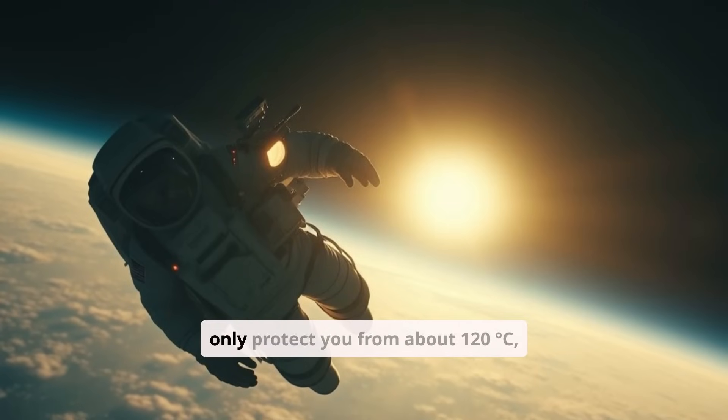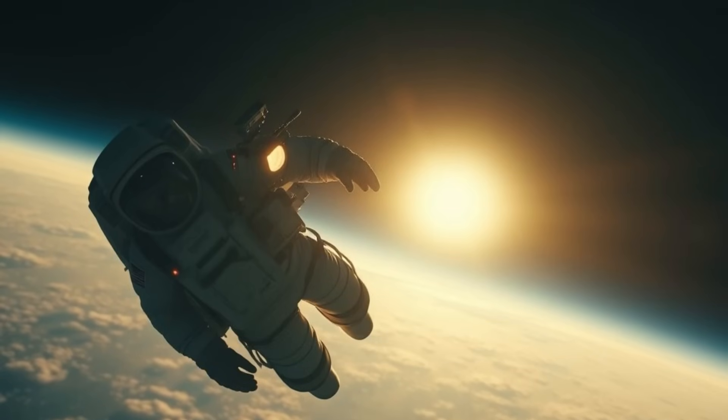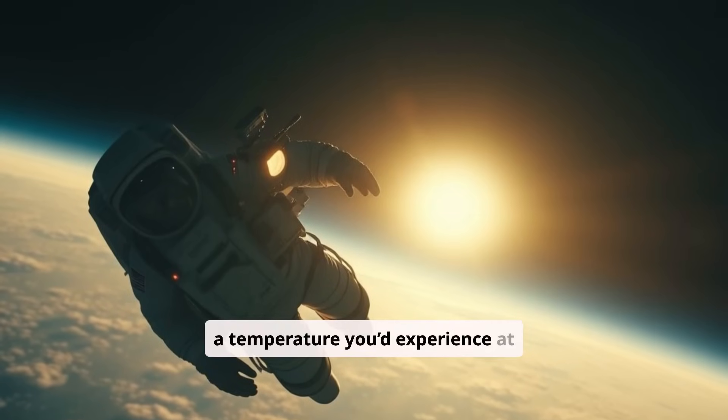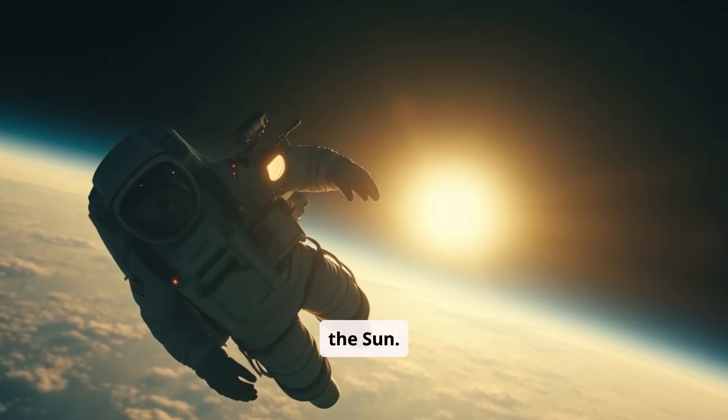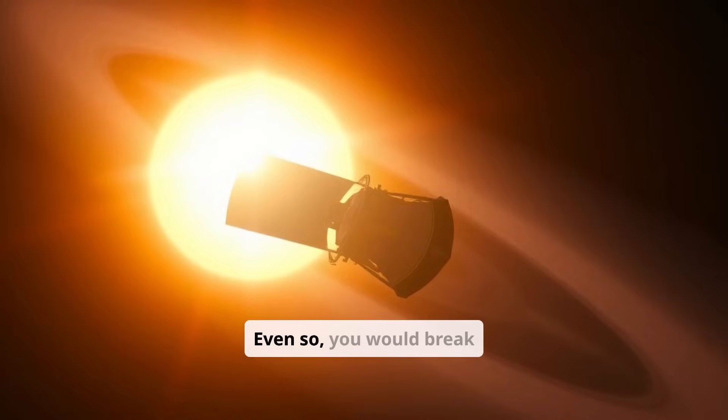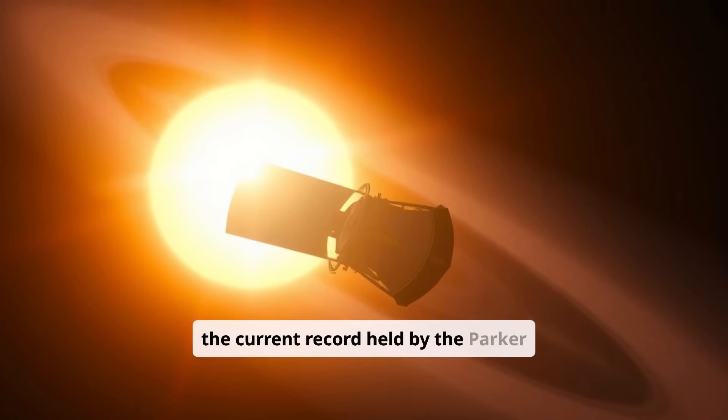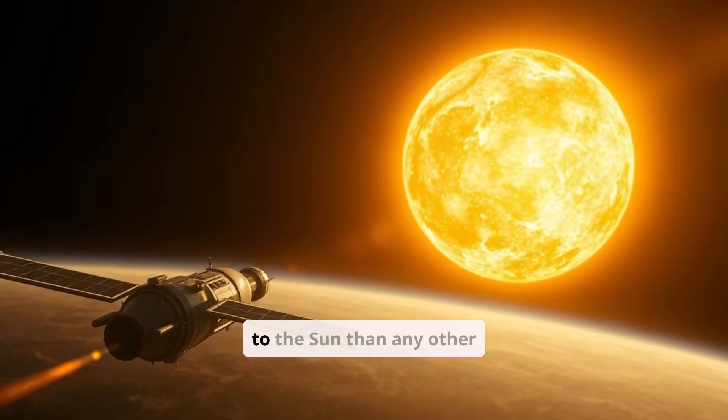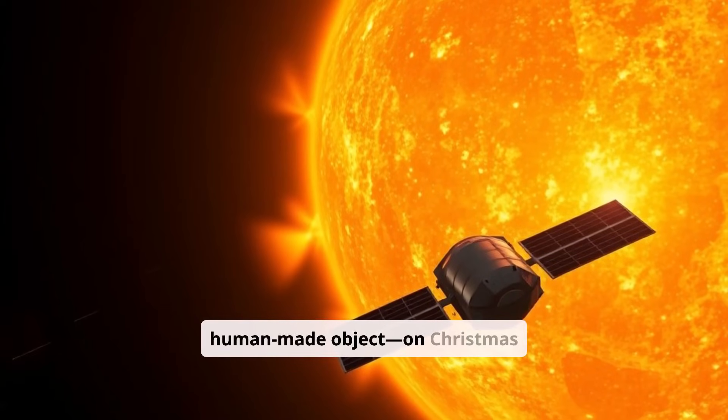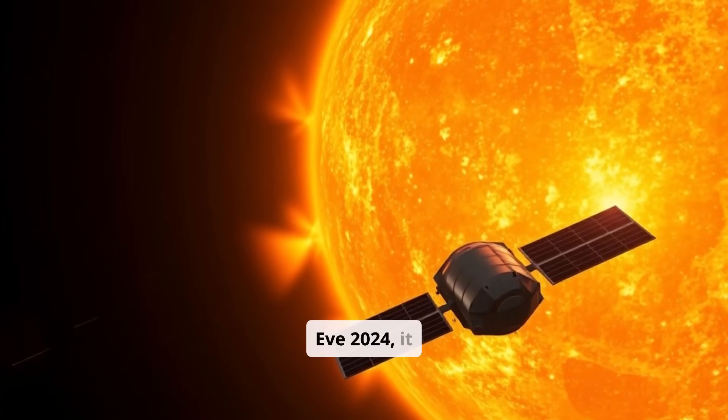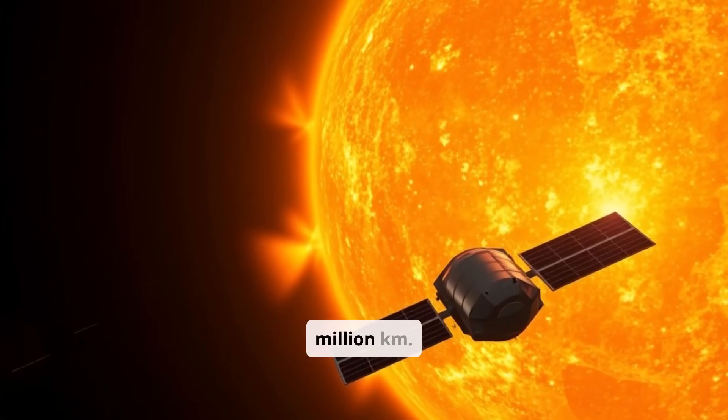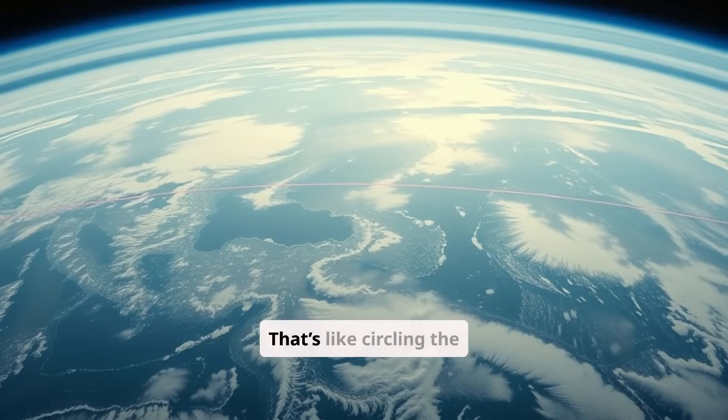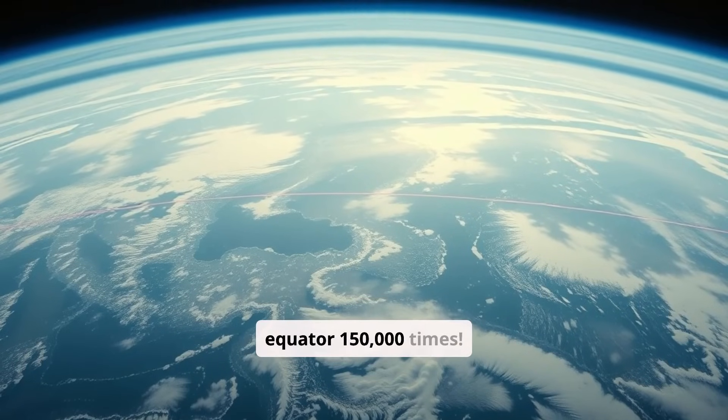A suit can only protect you from about 120 degrees Celsius, a temperature you'd experience at about 5 million kilometers from the sun. Even so, you would break the current record held by the Parker Solar Probe. That spacecraft came closer to the sun than any other human-made object. On Christmas Eve 2024, it got as close as 6.1 million kilometers. That's like circling the equator 150,000 times.